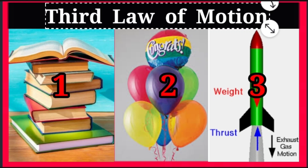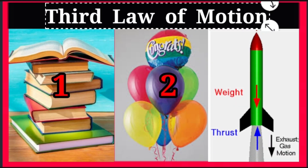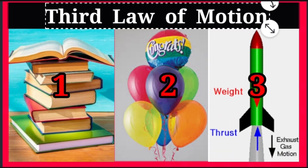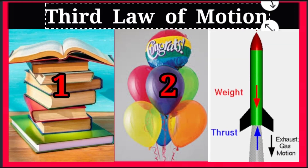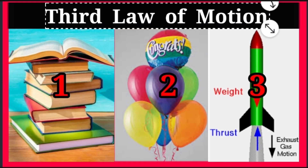The third example is the motion of a rocket. In this motion, gases move vertically downward — that is the action. The rocket moves vertically upward — that is the reaction of the gases. This is also an example of the third law of motion. From these examples, we can conclude that every action has a reaction, and both action and reaction are equal but opposite in direction.